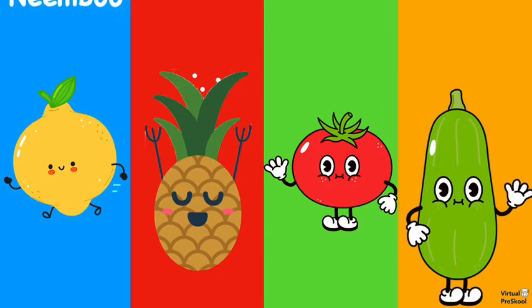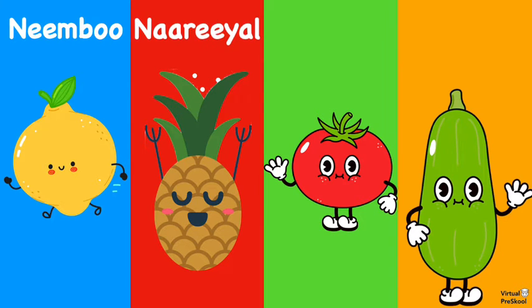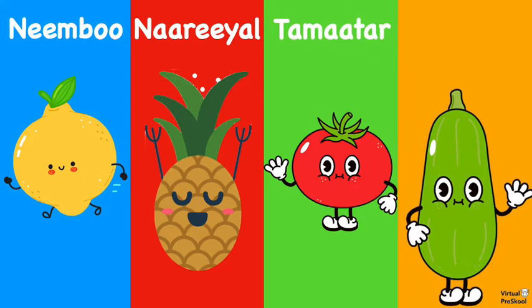Lemon is nimbu, nimbu. Coconut is nariyal, nariyal. Tomato is tamatar, tamatar. And zucchini is turi, turi.